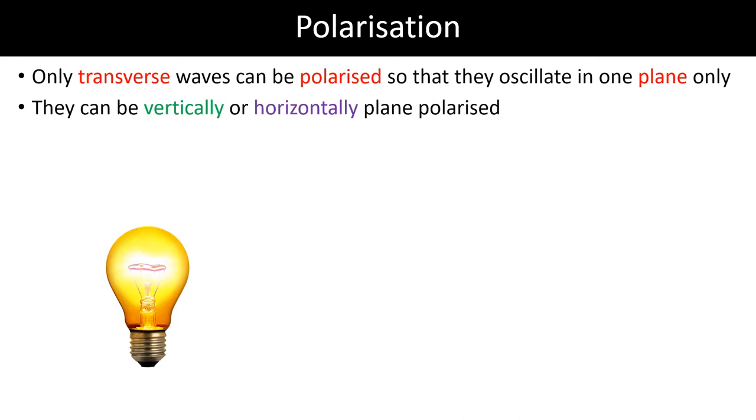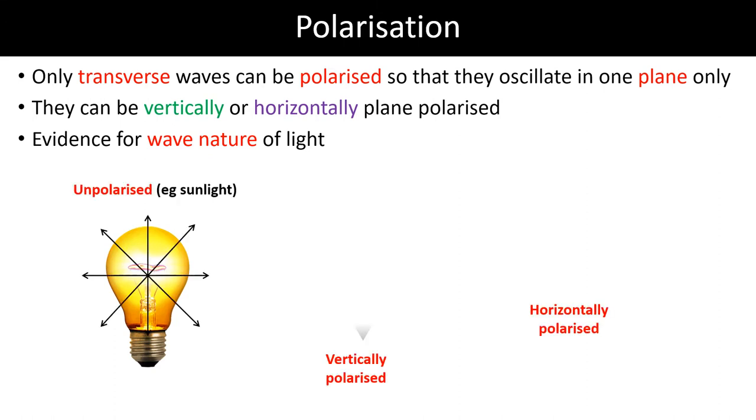And these can oscillate either vertically or in horizontal planes. And they're good evidence for the wave nature of light. Light likes to behave like waves sometimes.